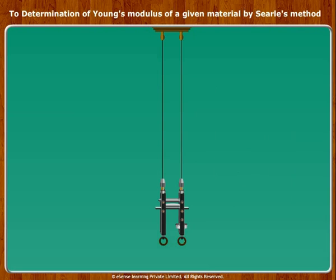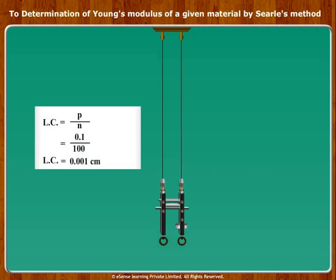The number of divisions on the circular scale n is equal to 100. Therefore, the least count (LC) of the micrometer is equal to P upon n, which is 0.1 upon 100. Hence, the least count of the screw attached to the frame F1 is equal to 0.001 centimeter.